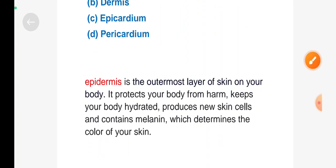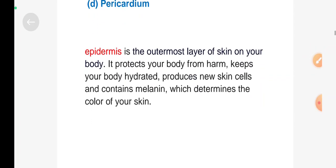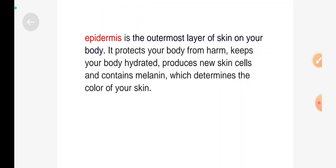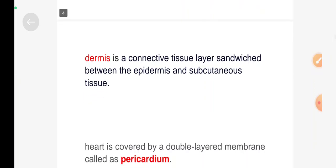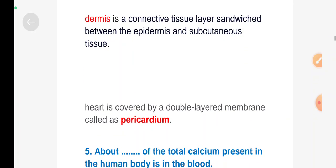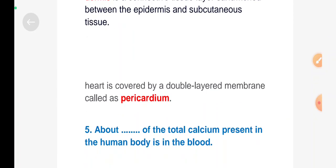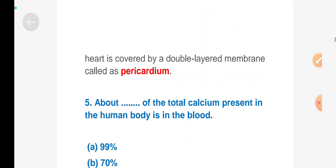Epidermis is the outermost layer of the skin on your body. It protects your body from harm, keeps your body hydrated, produces new skin cells, and contains melanin which determines the color of your skin. Dermis is the connective tissue layer sandwiched between the epidermis and subcutaneous tissue. Heart is covered by a double-layered membrane called pericardium.